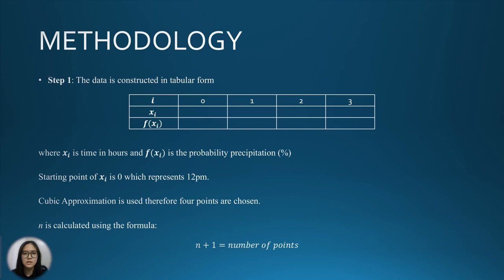I'm Serephine Mui Chau'en with matrix number AF210118. I'll be presenting the methodology part. First, the data is constructed in tabular form, which is shown in the slide, where x_i is time in hours and f(x_i) is the probability precipitation in percentage. Starting point of x_i is 0, which represents 12 pm.